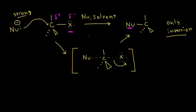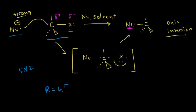Why do we call it SN2? S stands for substitution, N stands for nucleophilic — our nucleophile is substituting — and the 2 comes from the fact that it's bimolecular, meaning the overall rate depends on the concentration of two reactants: both the nucleophile and the alkyl halide. The rate equals the rate constant K times the concentration of the alkyl halide times the concentration of the nucleophile. In SN1, the rate depended only on the concentration of the alkyl halide.